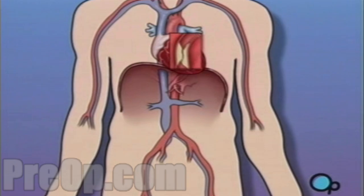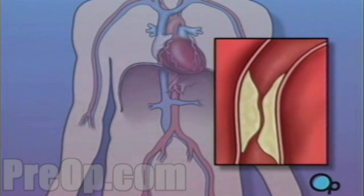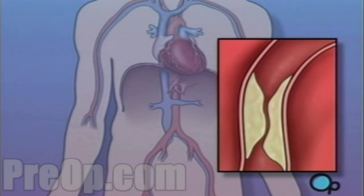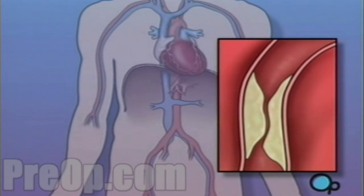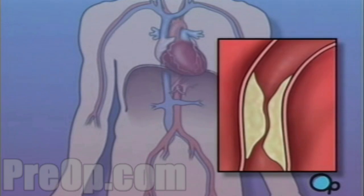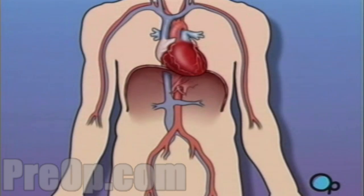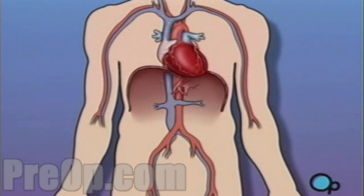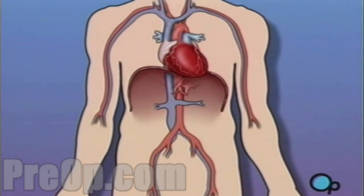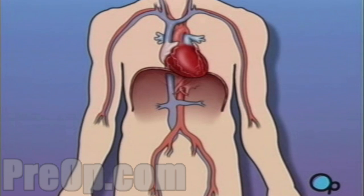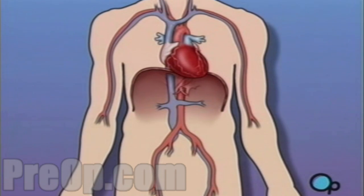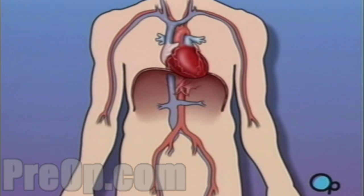Sometimes these blood vessels can narrow or become blocked by plaque deposits, restricting normal blood flow. In simple terms, a balloon angioplasty with stent insertion is a procedure used to increase the amount of blood flowing through the coronary artery.